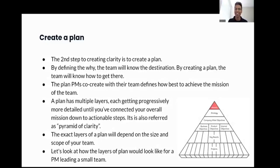The second step to creating clarity is to create a plan. By defining the why, the team will know the destination, and by creating the plan, the team will know how to get there. The plan PMs co-create with their team defines how to best achieve the mission. A plan has multiple layers, each getting progressively more detailed until you have connected your overall mission down to actionable steps — it is also referred to as the pyramid of clarity. On the right you can see an example. The exact steps of a plan will usually depend on the size and scope of your team.